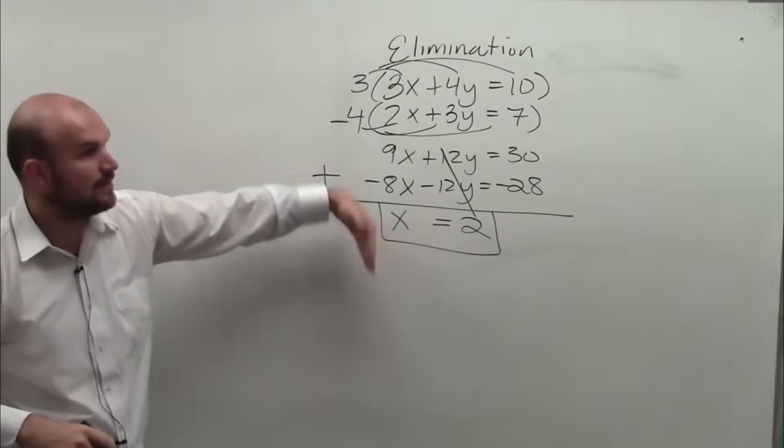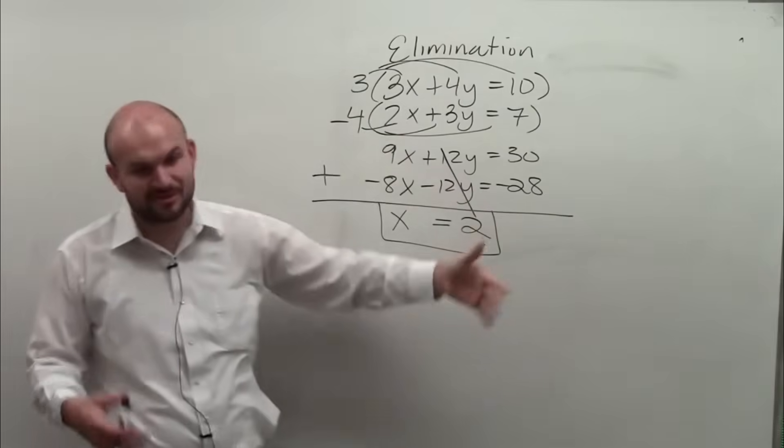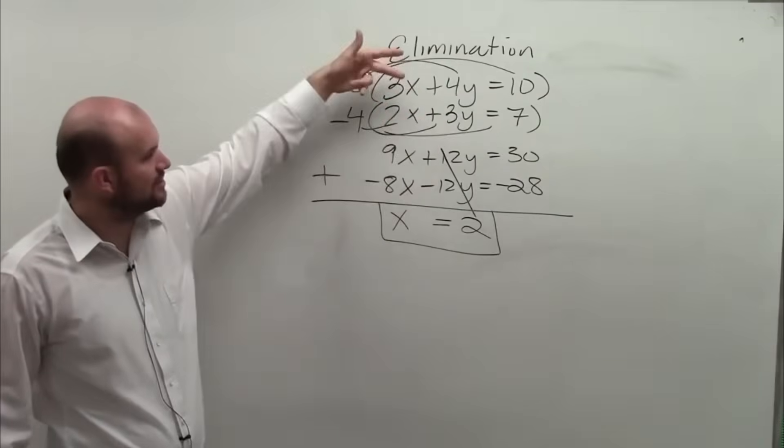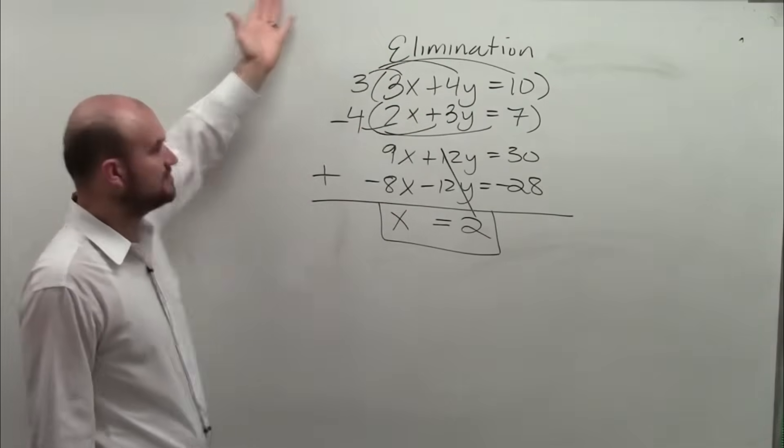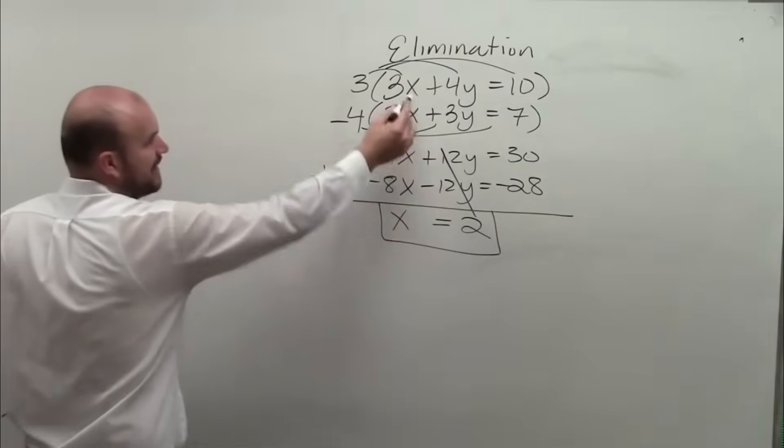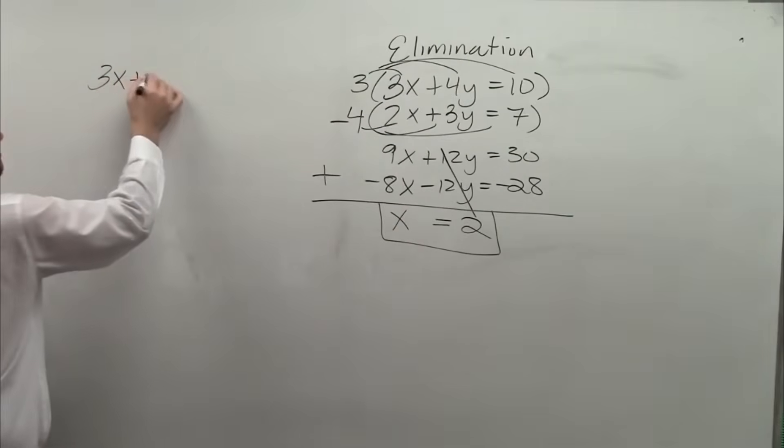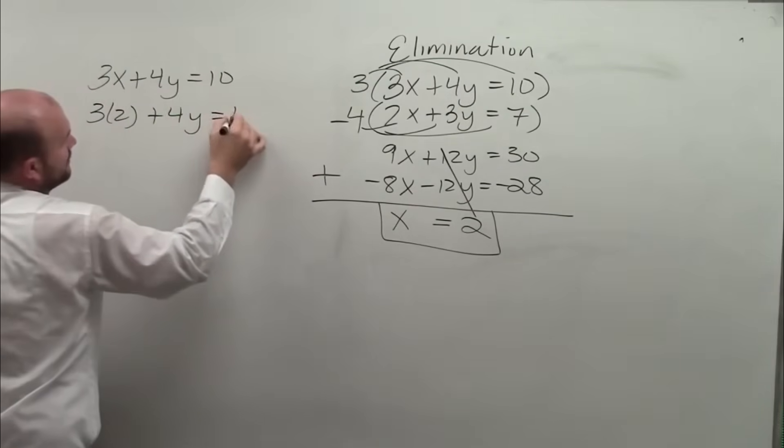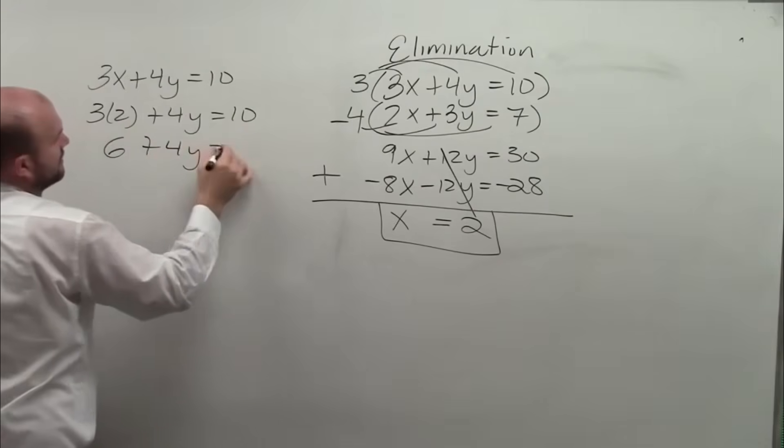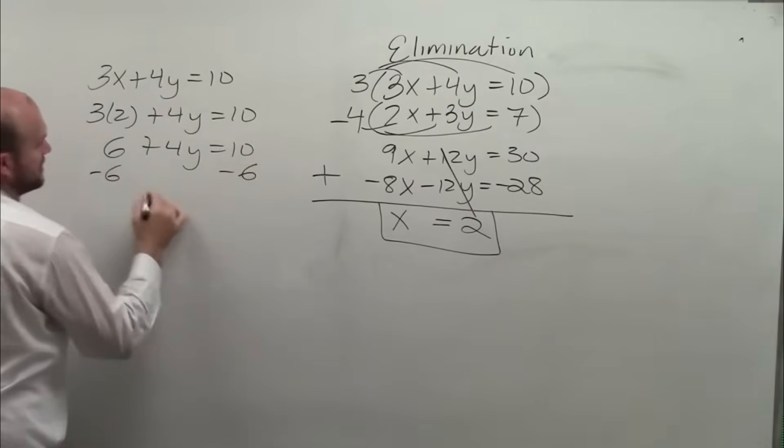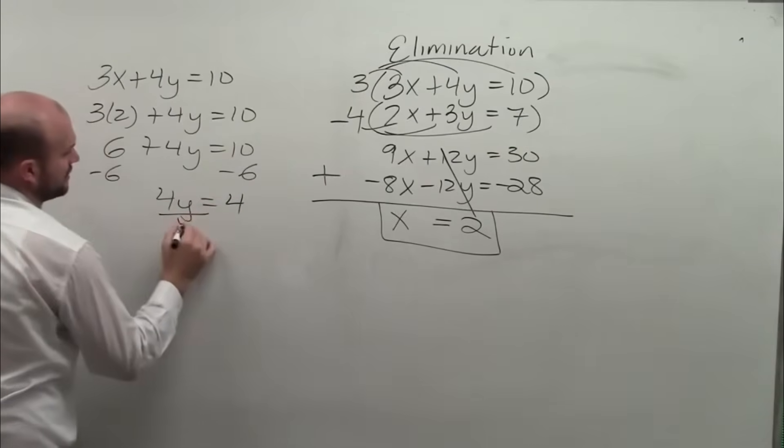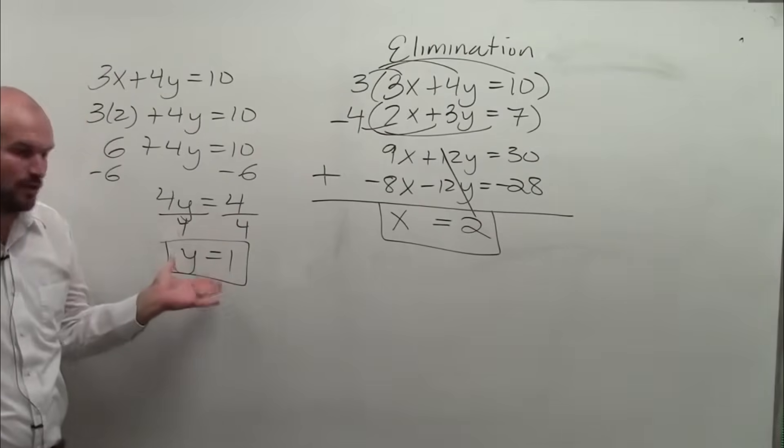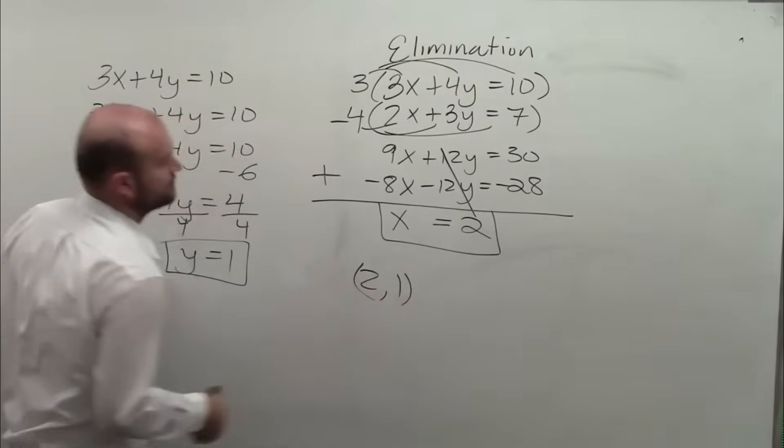Now we need to figure out what y is. But the problem, you remember in substitution how nice it was to have y solved to plug the other one in. Here, we don't have one solved. So we just have to pick an equation. So, Jeremy, which equation? The top one or the bottom one? Top one. It doesn't matter. Pick whatever one. And you could use that one or you could use that one. But obviously, these are smaller numbers. So I'm going to say 3x plus 4y equals 10. I know what x is. 3 times 2 plus 4y equals 10. 6 plus 4y equals 10. Subtract 6. Subtract 6. 4y equals 4. Divide by 4. Divide by 4. Y equals 1. So again, ladies and gentlemen, we have a coordinate point of 2, 1.